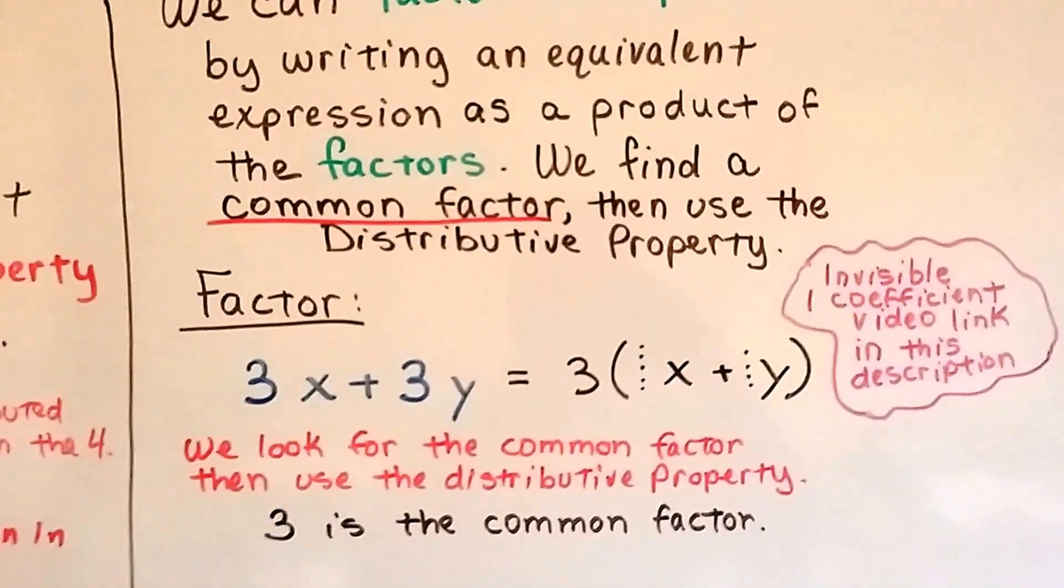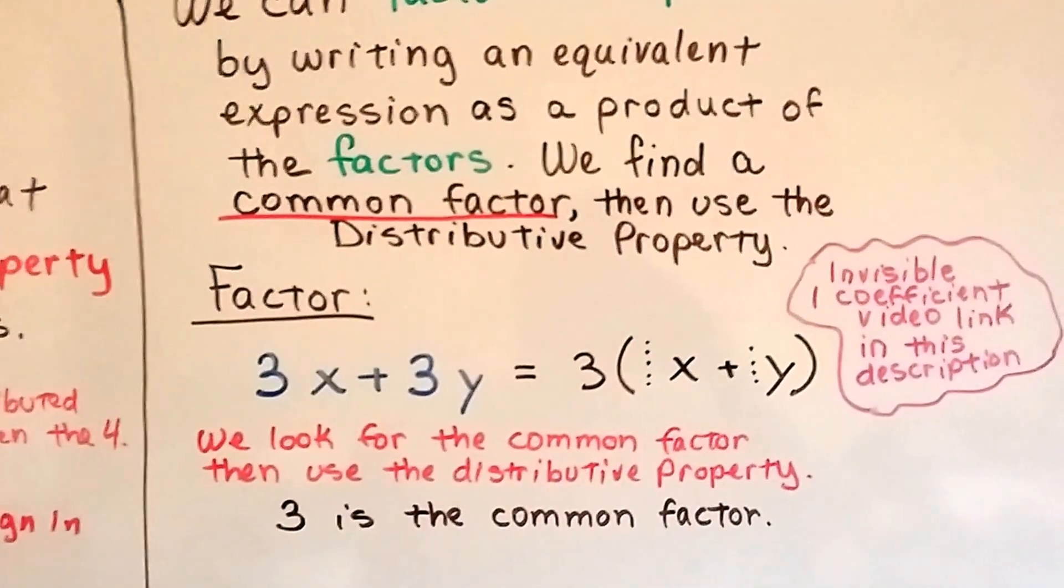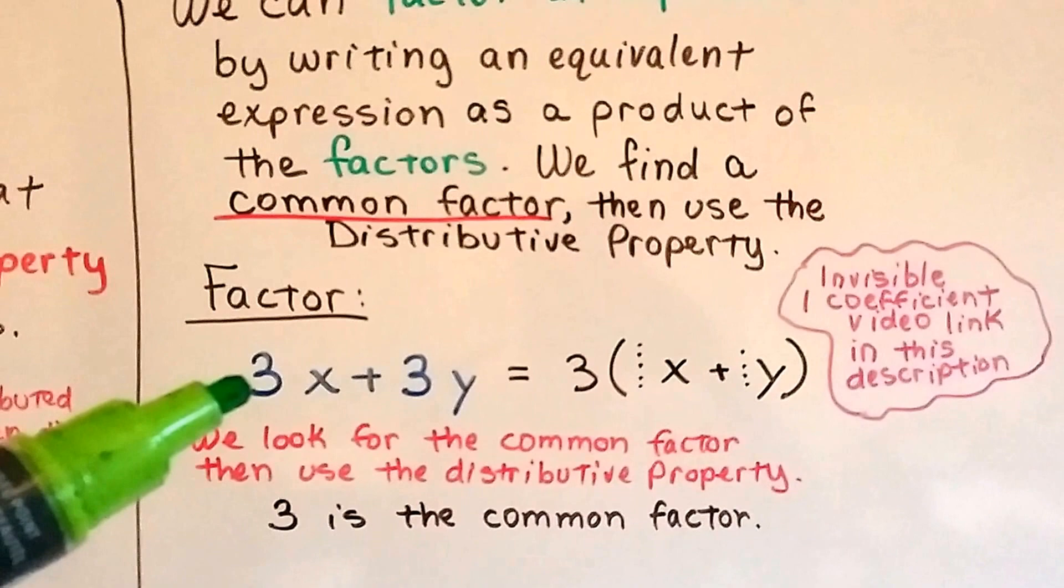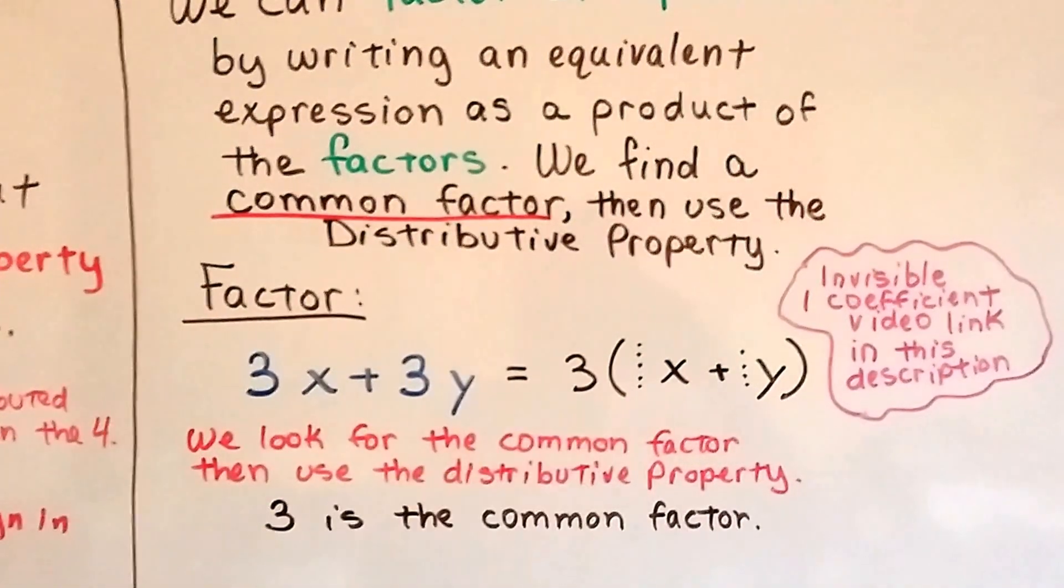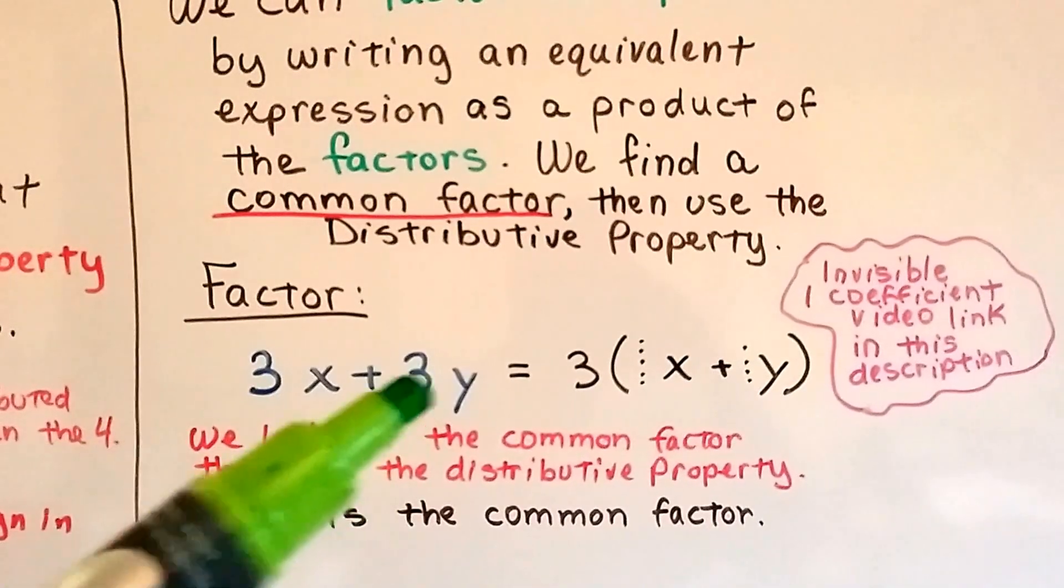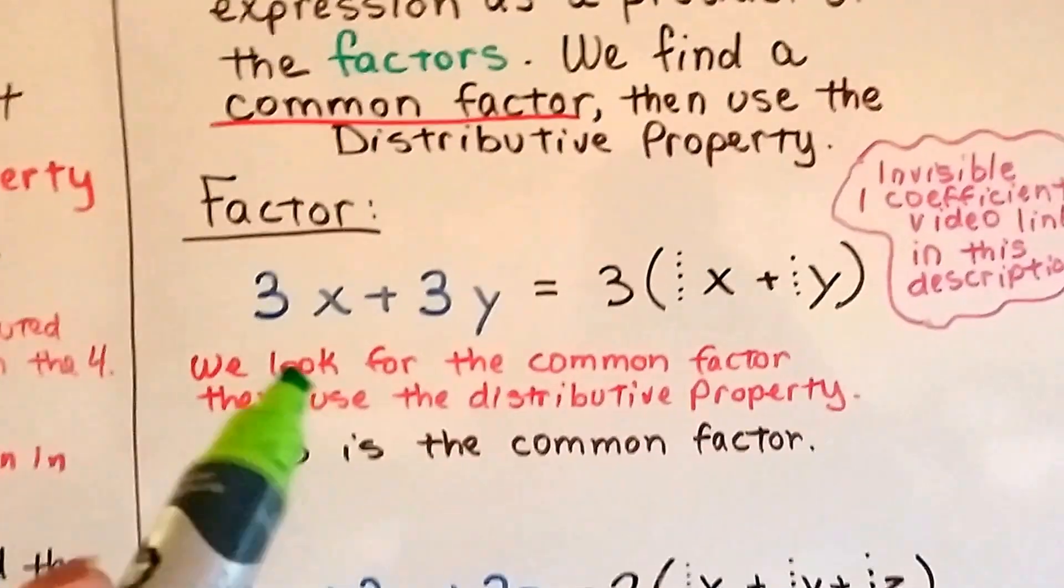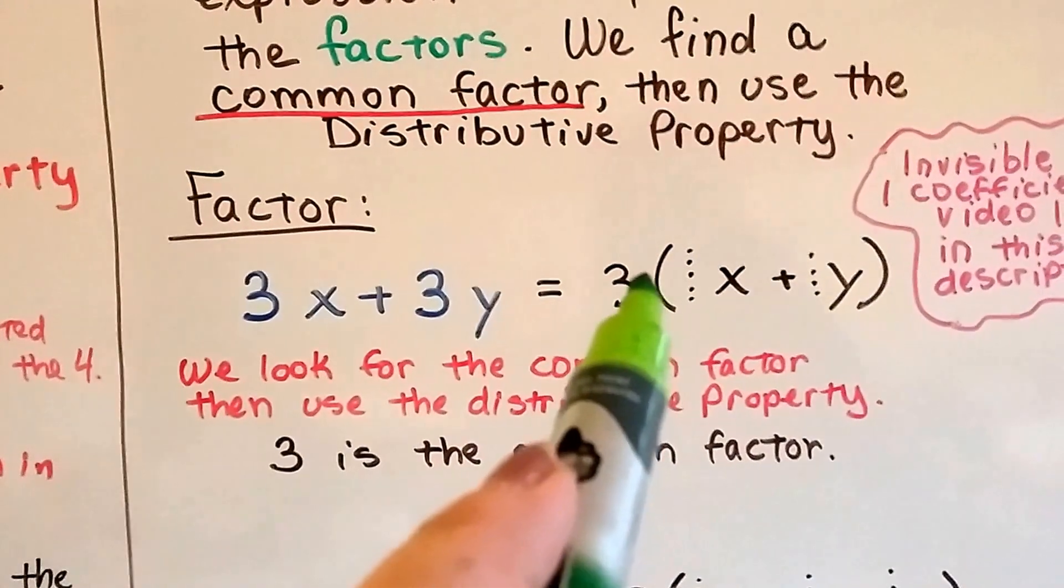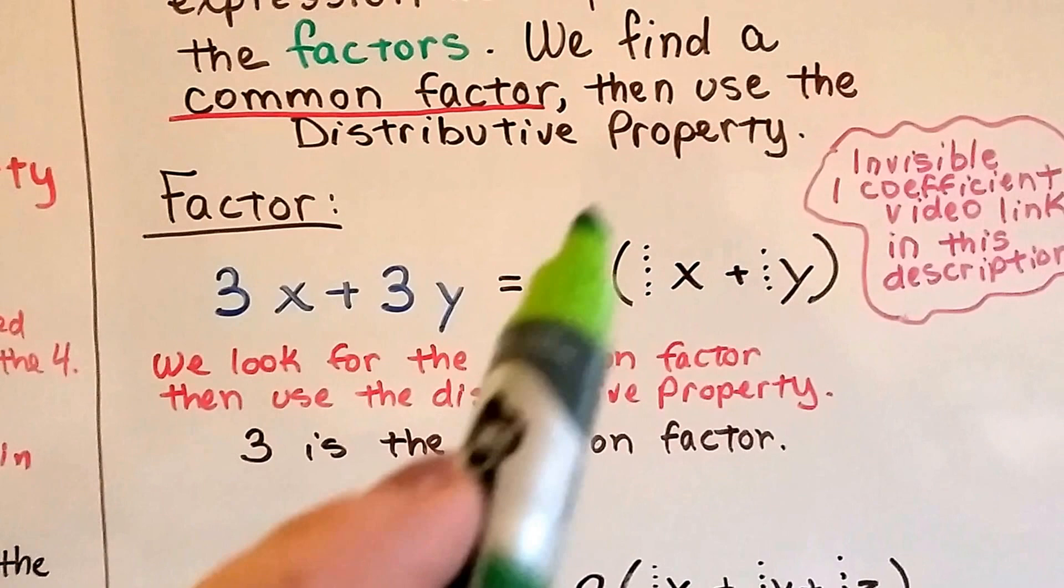So we've got 3x plus 3y, and we look for the common factor and then use the distributive property. 3 is a common factor for 3 and 3, and 1, right? They both have 3 times 1. So what we do is, because 3 is the common factor, we put the 3 on the outside of the parentheses and the x plus y on the inside.